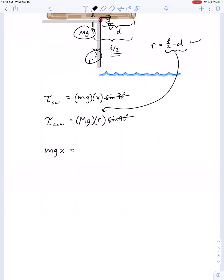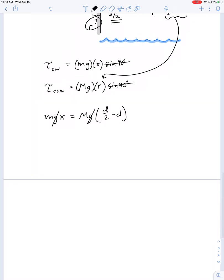Mgx has to equal capital Mg R where R is replaced with L over 2 minus D. So we can cancel out the G. It appears on both sides of the equation. And it looks like X is equal to capital M over lowercase m times the quantity L over 2 minus D. Alright.